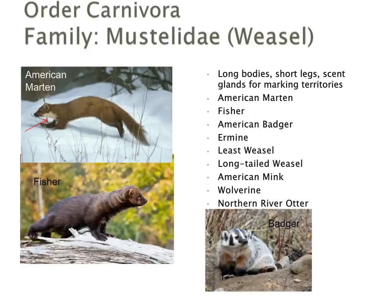The next family is the Mustelidae, or the weasel family. There are a number of different species in this family, all sharing some relatively common characteristics: long bodies, very short legs, and scent glands. Species we'll cover include the American marten, the fisher, the American badger, the ermine, the least weasel, the long-tailed weasel, the American mink, the wolverine, and the northern river otter.